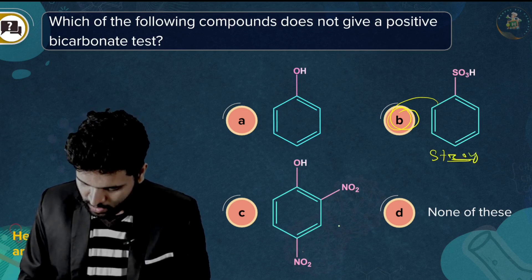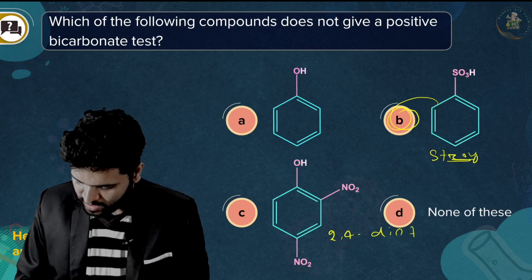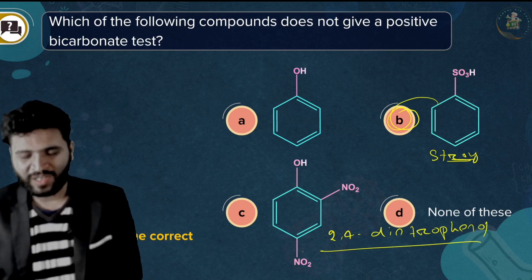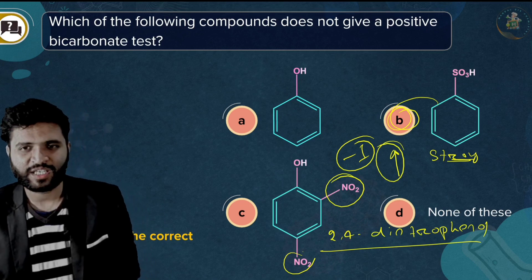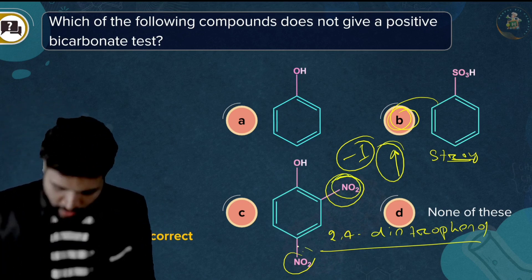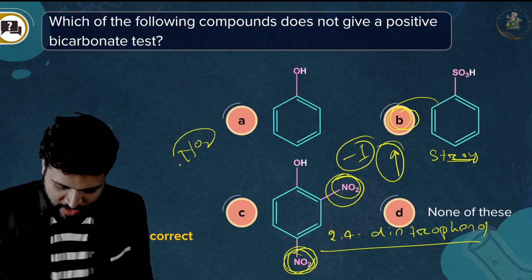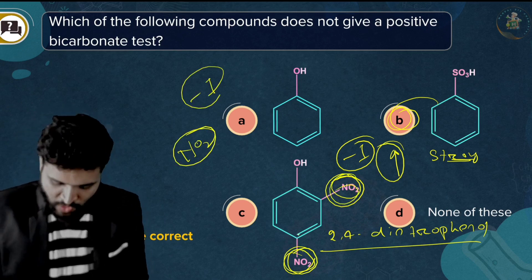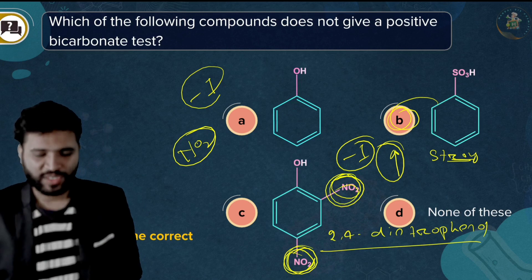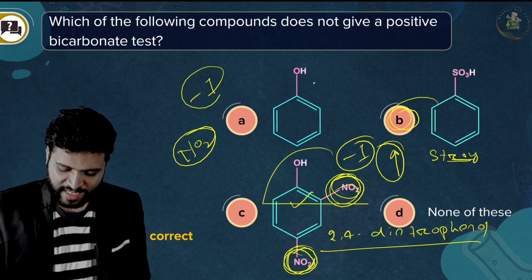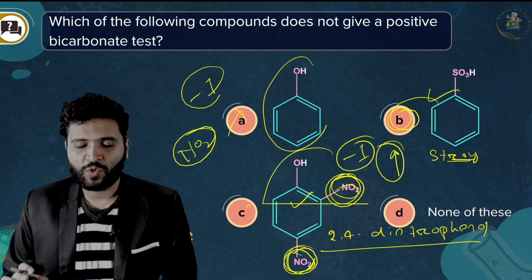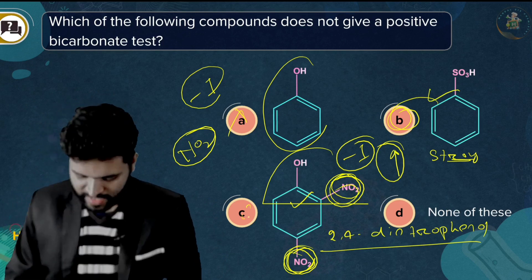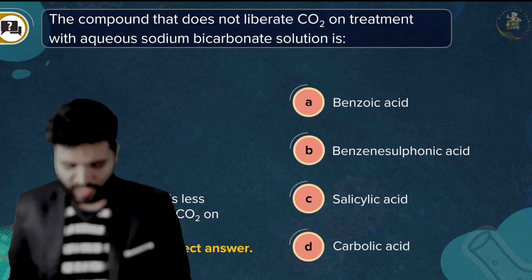2,4-dinitrophenol gives the bicarbonate test. This is because the two NO2 (nitro) groups on the ring are electron-withdrawing groups, which increase the acidity of phenol significantly. Because 2,4-dinitrophenol is more acidic than phenol, it gives a positive bicarbonate test, whereas plain phenol does not.